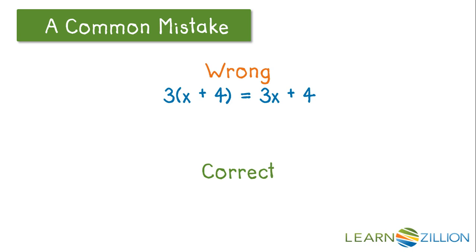The correct way to simplify this is to say that 3 times the quantity x plus 4 is equal to 3x plus 12, because 3 times x is 3x and 3 times 4 is 12.